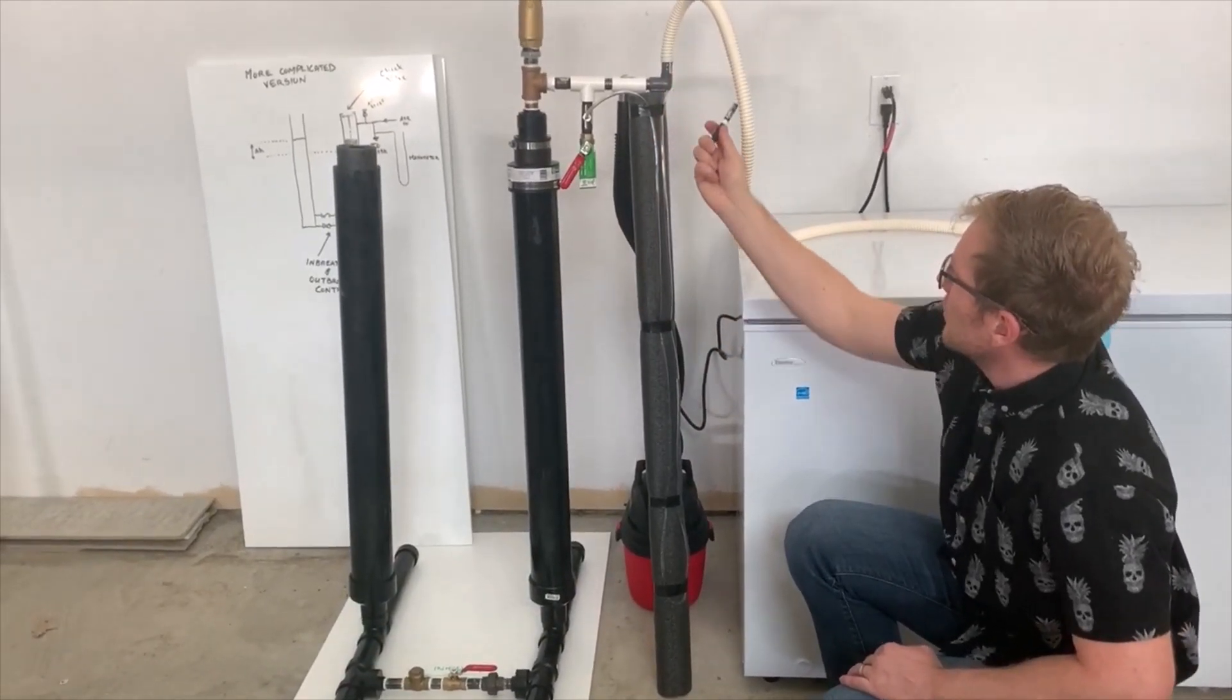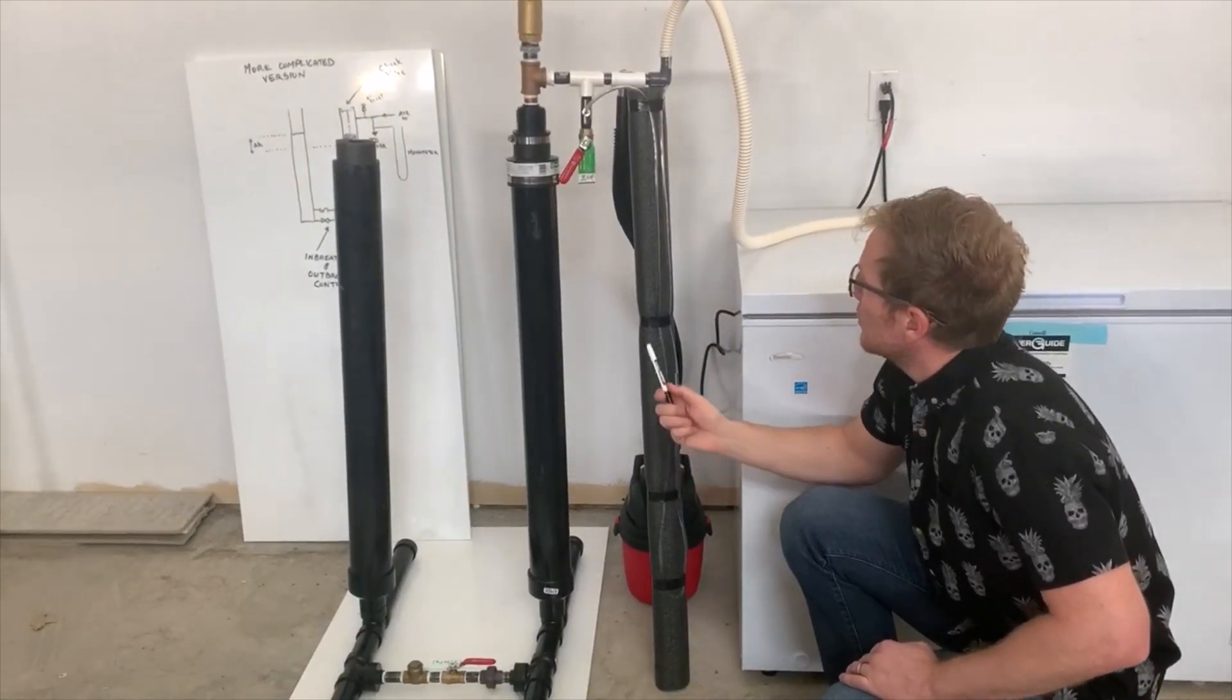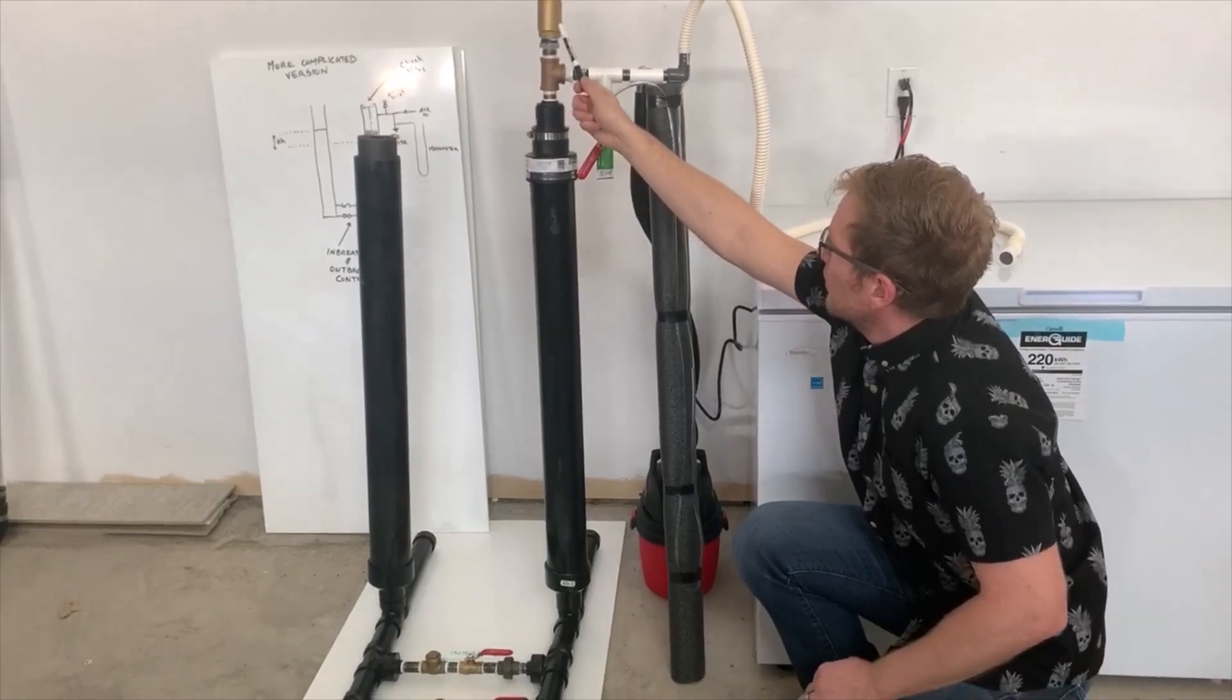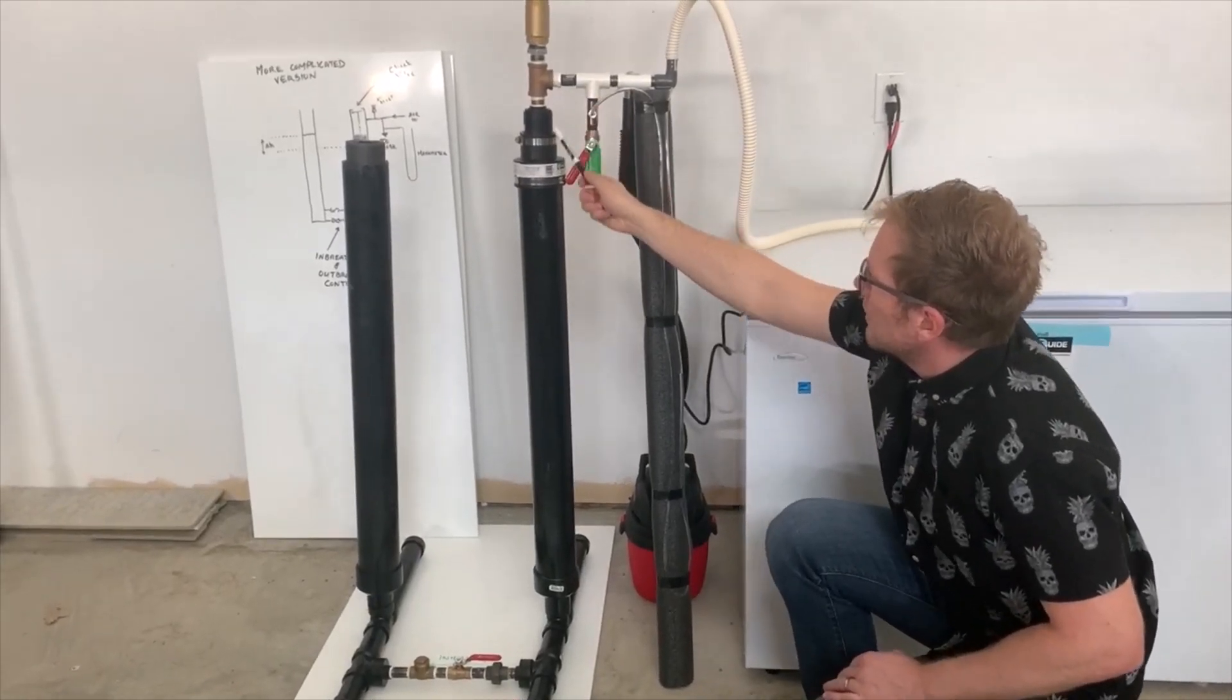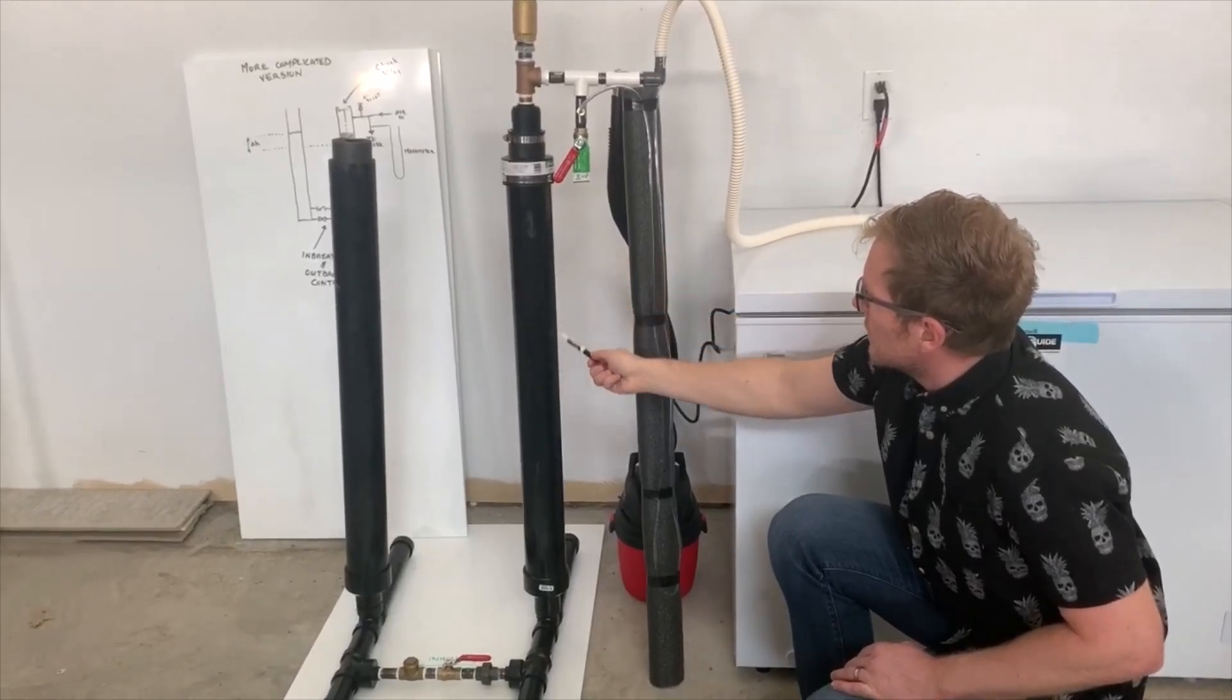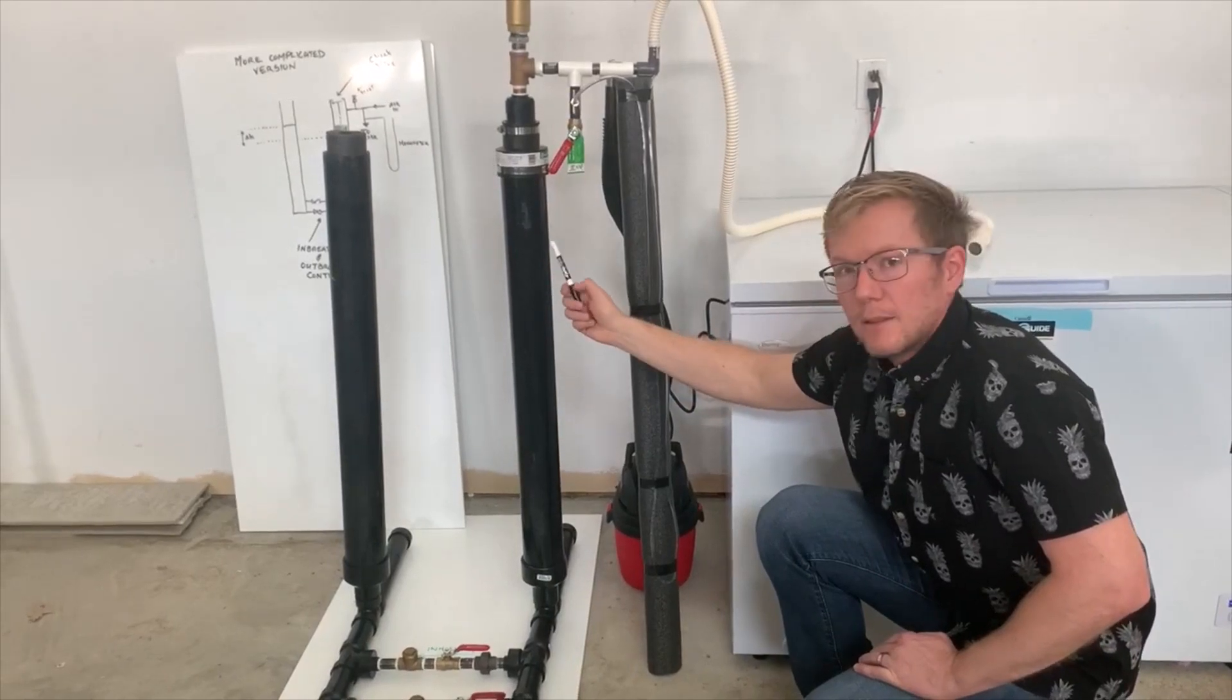This line here would be the one that potentially goes to a mask or intubation tube. This is a check valve which has a chain and a push rod going down into this side of the tube. Inside this side of the tube is a float made out of two-inch ABS plastic fittings.